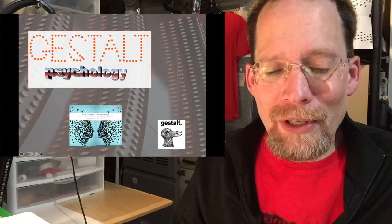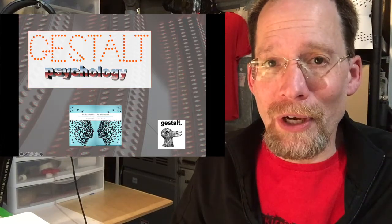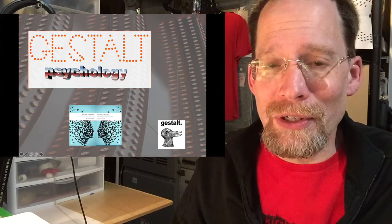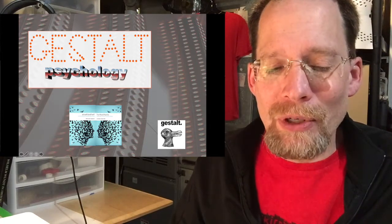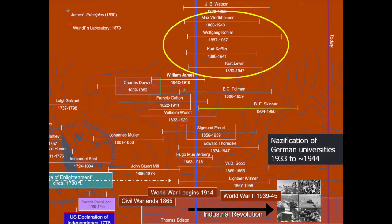In this video I'm going to talk about some key features of the Gestalt system in History and Systems, and a little bit about visual perception and insight learning. Here's a visual reminder — a timeline in orange. My Gestalt psychology slides feature orange, and circled in yellow are the Gestalt psychologists, in particular the three musketeers: Wertheimer, Köhler, and Koffka, and also Kurt Lewin.